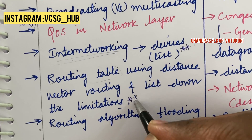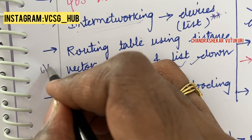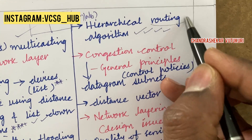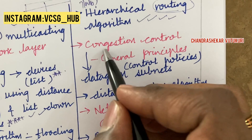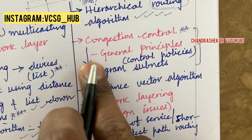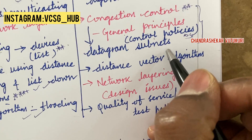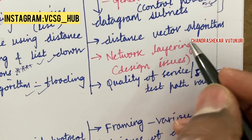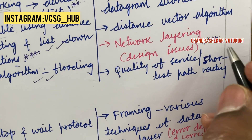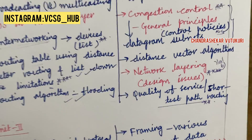Distance vector routing and listing its limitations is said to be a gunshot and topmost question. The routing algorithm and flooding is also said to be a short question — that may be 6A or 6B if it is a long question. Hierarchical routing algorithm is said to be a topmost question related to routing — you will get one question for sure. Congestion control is also a topmost question; you are supposed to work out all parameters like general principles and control policies — this may be a two-mark or three-mark question. Datagram subnets is a long question related to congestion control. Distance vector algorithm and network layer issues is said to be a short question. Quality of service and shortest path routing are said to be topmost questions which may be asked in 7A or 7B.